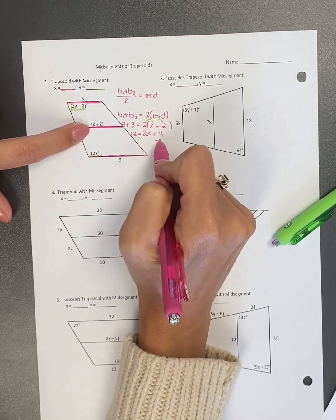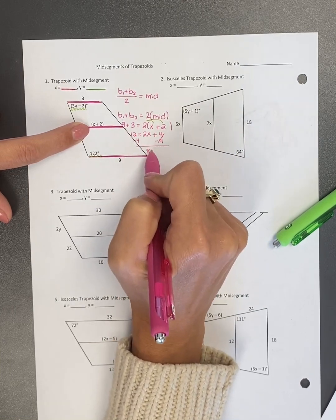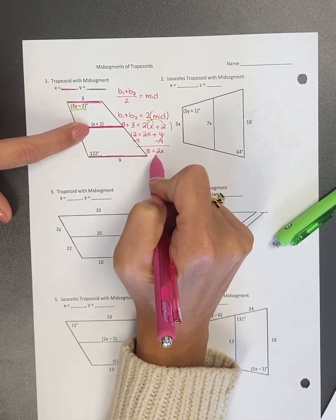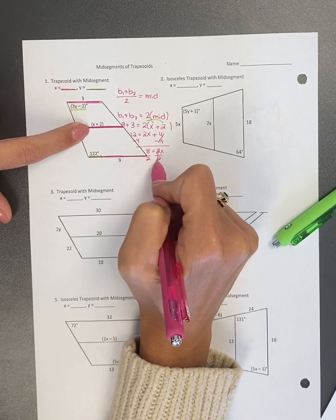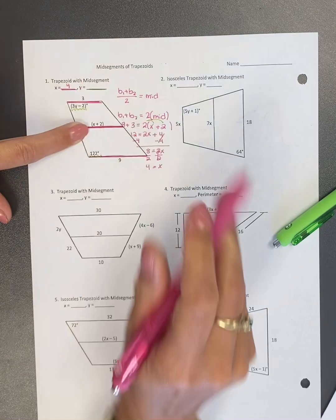I'm going to minus four to both sides minus four. So I get eight equals two X. Last step is division. So X equals four. So that's my side lengths.